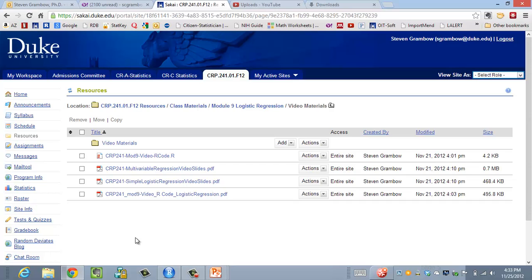So in the resources, class materials, module nine, video materials folder, resources folder on the website, you'll find a PDF of slides of both the simple logistic and multivariable regression videos as well as slides for this video and the R code, which I'm going to click and download.